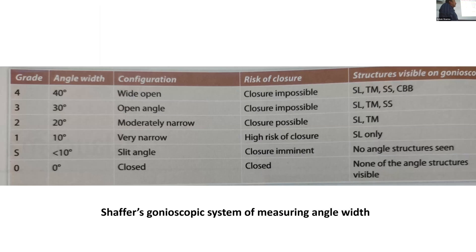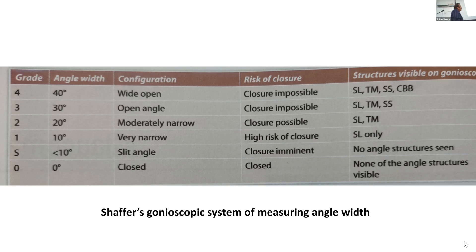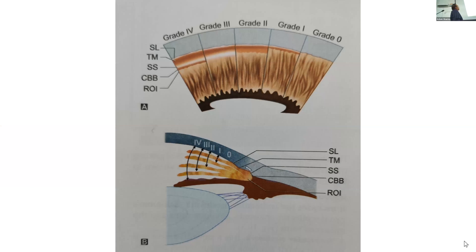We have grading of angles depending on gonioscopy. Grade four is around 40 degrees — wide open, closure is impossible; all four structures are visible: Schwalbe's line, trabecular meshwork, scleral spur, and ciliary body. In grade three you don't see the ciliary body; angle is narrow to 30 degrees. Grade two is 20 degrees — closure is possible, only Schwalbe's line and trabecular meshwork visible. Grade one is 10 degrees — very narrow, high risk of closure, only Schwalbe's line visible. Split angle — closure is imminent, no angle structures seen, cornea and iris are opposed. Grade zero is closed — no angle structure visible. The scleral spur, trabecular meshwork, and Schwalbe's line is the peripheral termination of Descemet's membrane.